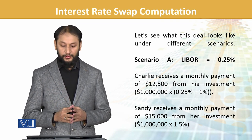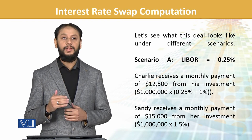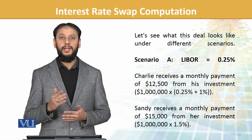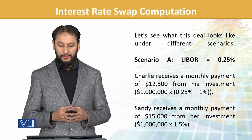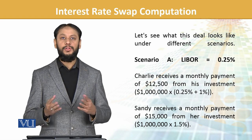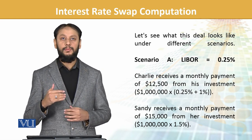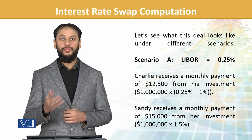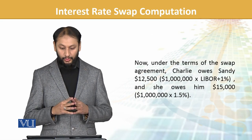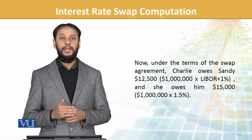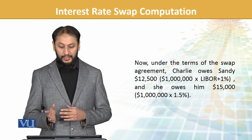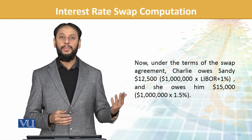In scenario one, when LIBOR is 0.25%, Charlie will receive a payment of 12,500. This is computed as 1% plus LIBOR of 0.25%, giving 1.25%, so he receives 12,500. Sandy, under the normal structure of 1.5%, will be receiving 15,000. Under the swap terms, Charlie owes Sandy 12,500 and Sandy owes Charlie 15,000.